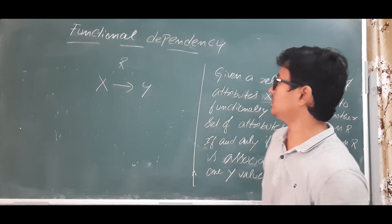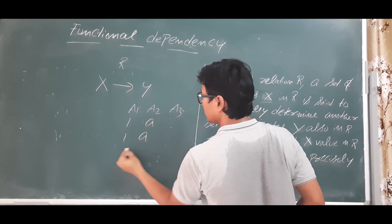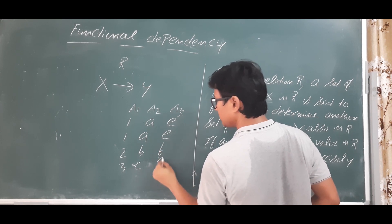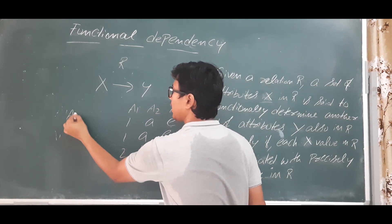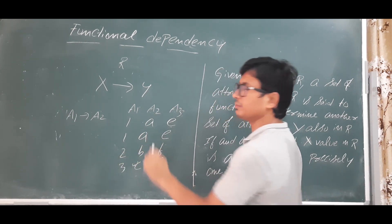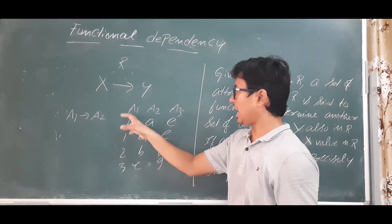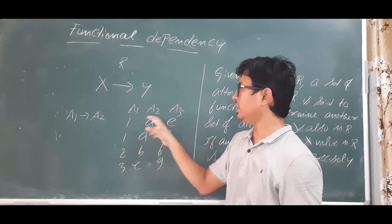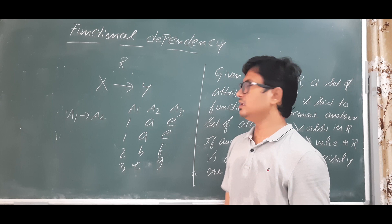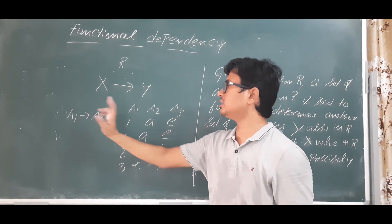Let me take another small example to show when X does functionally determine Y. I have attributes A1, A2, A3 with values: row 1 is (1, a, e), row 2 is (1, a, e), row 3 is (2, b, f), row 4 is (3, c, g). Here for A1 = 1, A2 is always 'a'; for A1 = 2, A2 is 'b'; for A1 = 3, A2 is 'c'. Since each A1 value gives exactly one A2 value, I can write A1 functionally determines A2.